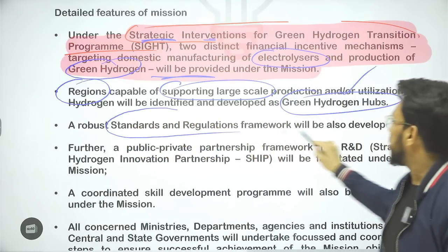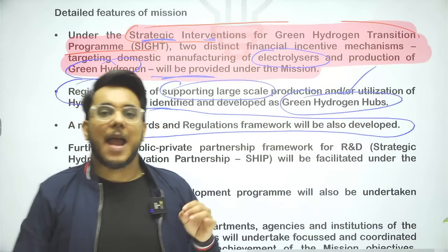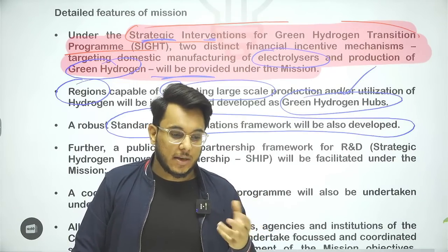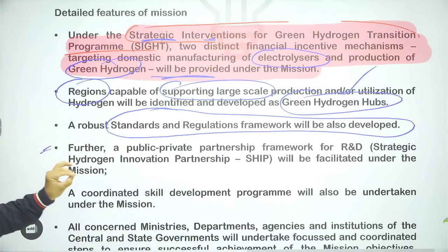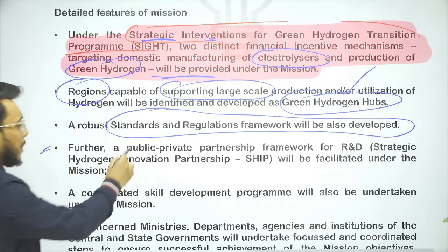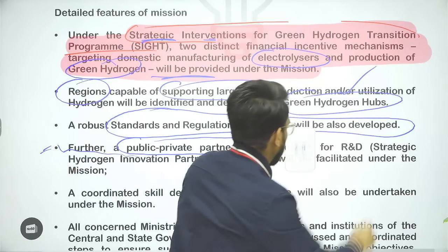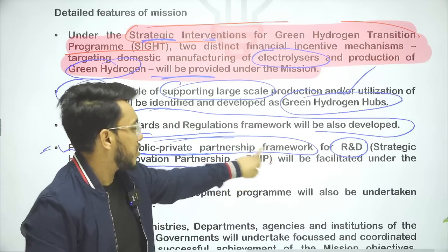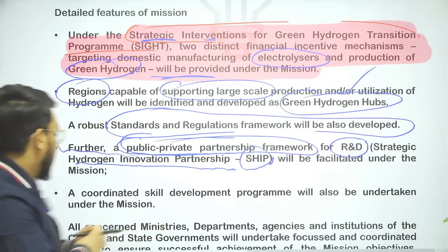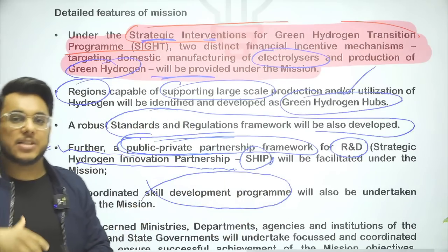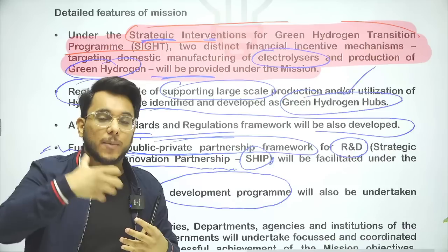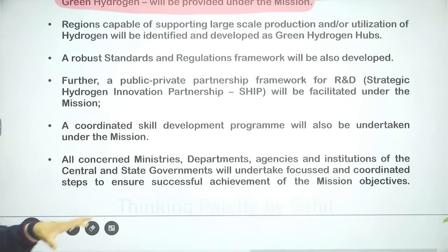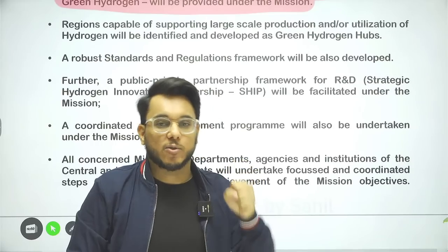A standards and regulation framework will also be developed. Handling hydrogen can be very dangerous because when it comes in contact with air it becomes inflammable and explosive. A public-private partnership (PPP) framework, called SHIP — Strategic Hydrogen Innovation Partnership — will be established particularly for research and development. A skill development program will also be carried out, as a more skilled workforce is needed for green hydrogen development. Finally, all related ministries, departments, and institutions will come together to achieve the objectives of the National Green Hydrogen Mission.